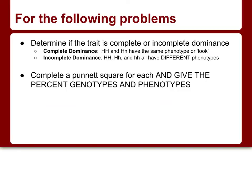We're going to do a couple of example problems together, and it's important to determine if the trait is complete or incomplete dominant. In complete dominance, both the homozygous dominant and the heterozygous have the same phenotype or appearance. For incomplete dominance, the homozygous dominant and heterozygous have different appearances, so all three — homozygous dominant, heterozygous, and homozygous recessive — have different phenotypes. The problems will indicate which type of dominance applies, and we'll use that to determine phenotype ratios.